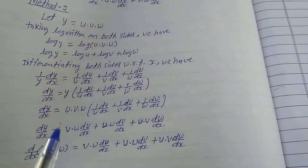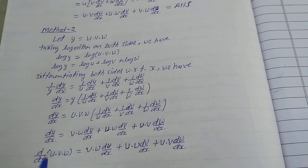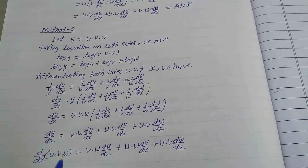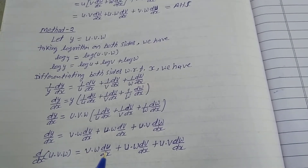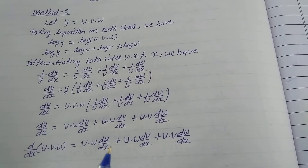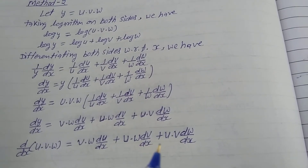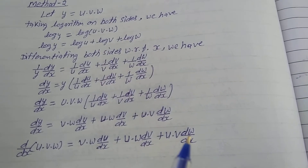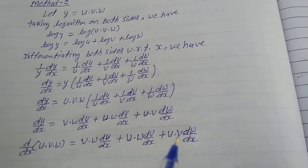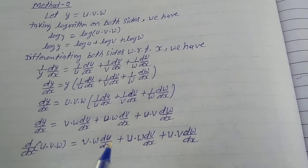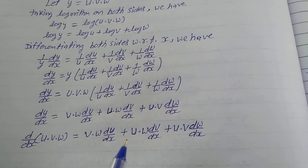Substituting y = u·v·w back: d/dx(u·v·w) = v·w · du/dx + u·w · dv/dx + u·v · dw/dx. That is what was given in the question — LHS equals RHS, hence proved. That is the complete solution.